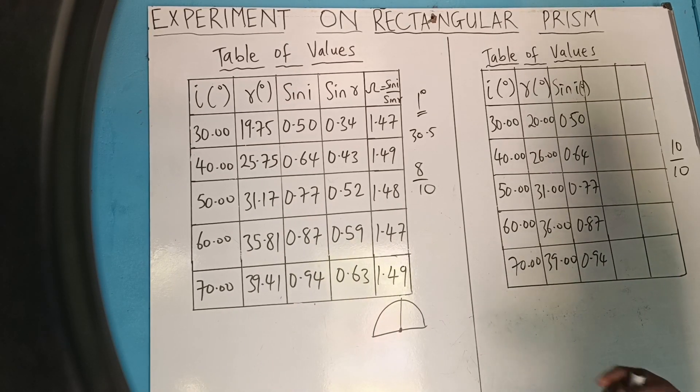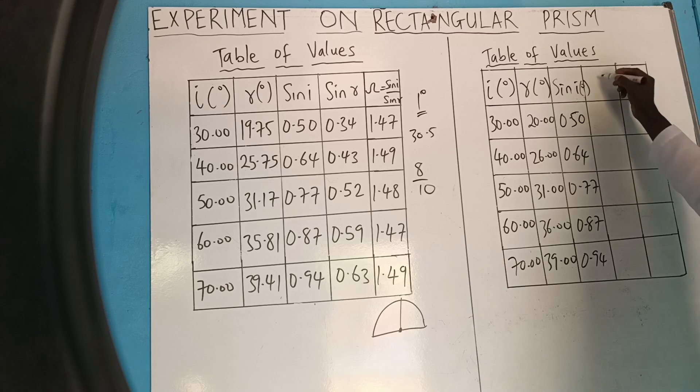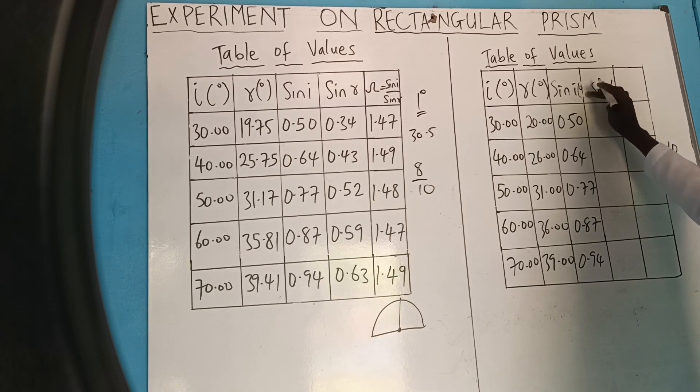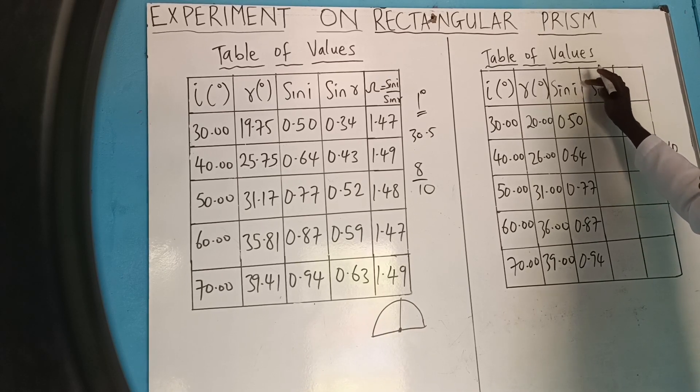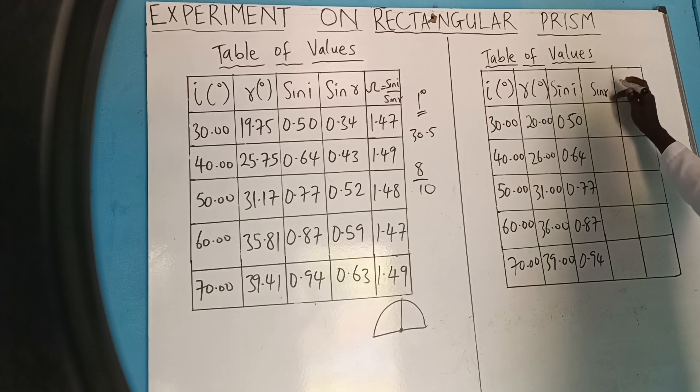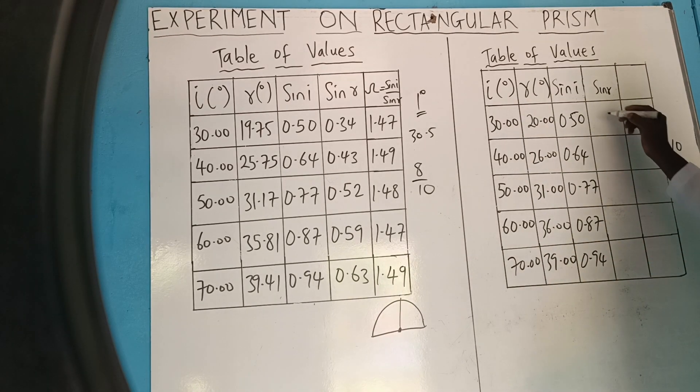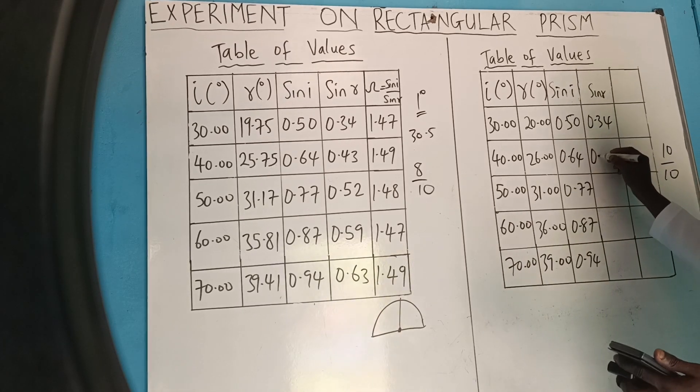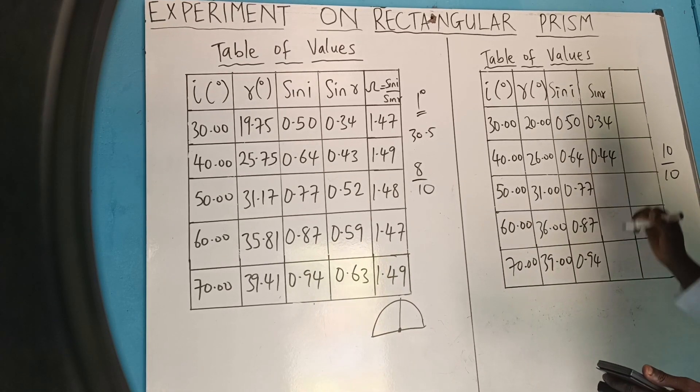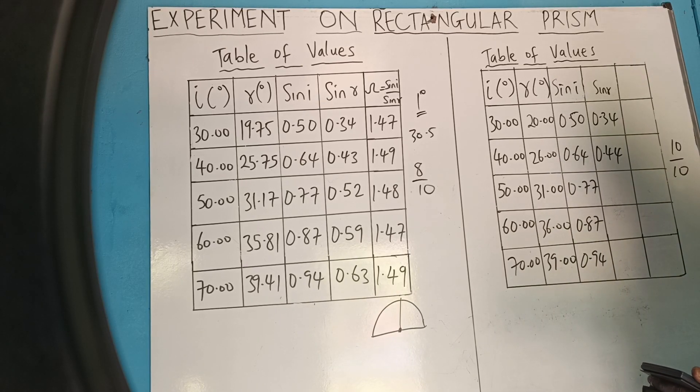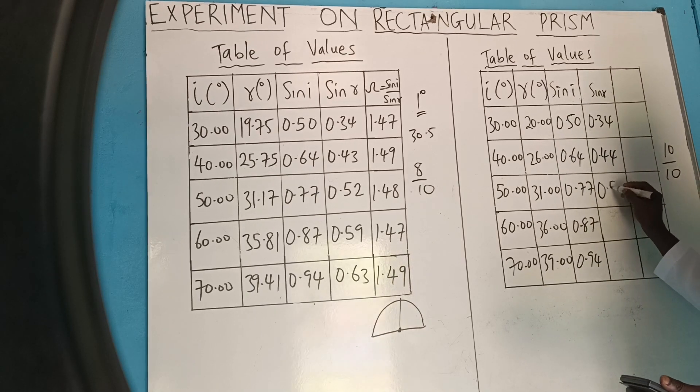But the value of sin R will now change. Sin R is not in degrees. Please, this one is not in degrees though. Sin R is no longer in degrees. It's an ordinary number. It is these angles that are in degrees. Sin 20 equals to 0.34. 0.44. Sin 31.